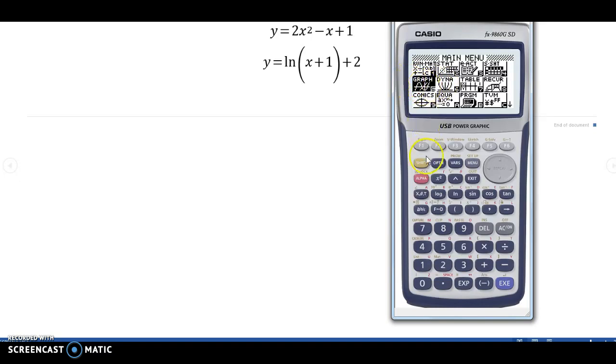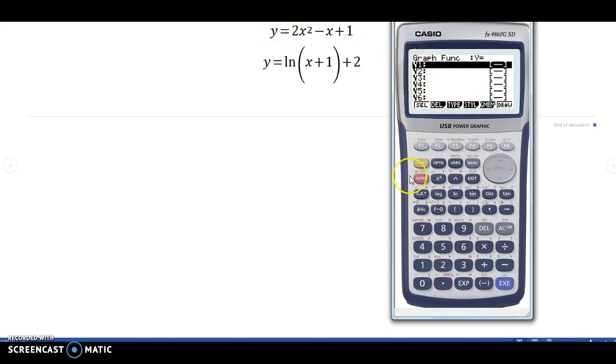So, go to the menu for graphs, that is menu 5, and input the two functions. Remember to use this as the x. And remember that the y equals stuff is here. So, you put 2x squared minus x plus 1,